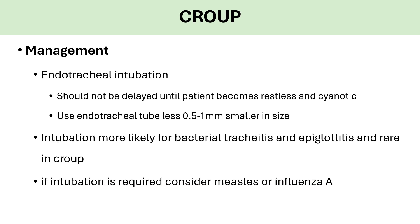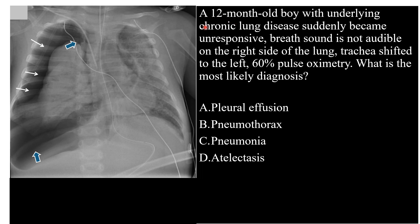Consult pediatric pulmonology or ENT if there is a prolonged course or multiple days in the hospital. Endotracheal intubation should not be delayed until the patient becomes restless and cyanotic. Use a smaller endotracheal tube — 0.5 to 1 mm smaller in size. Intubation is more likely with bacterial tracheitis or epiglottitis but rare in classic croup. If intubation is required, think about measles or influenza A as a cause.